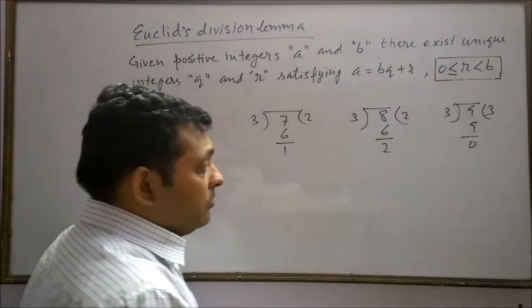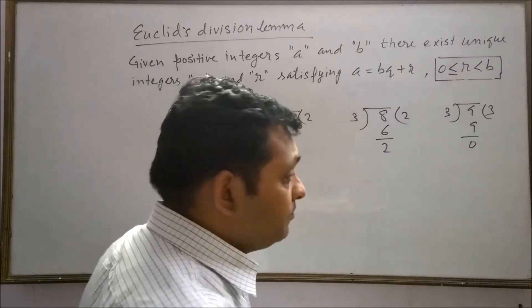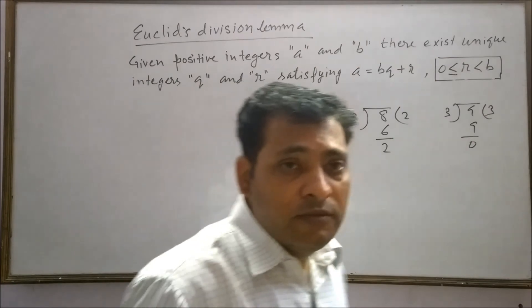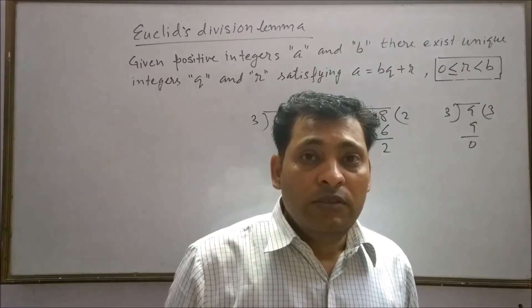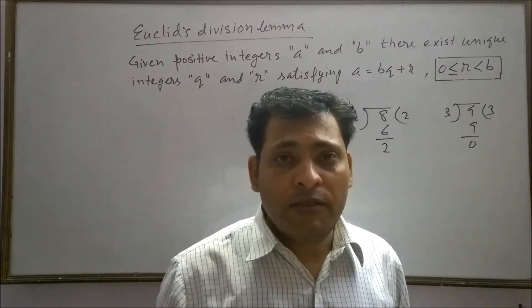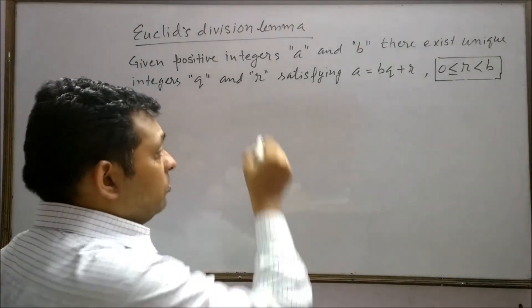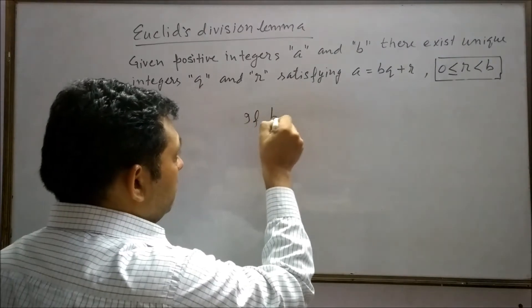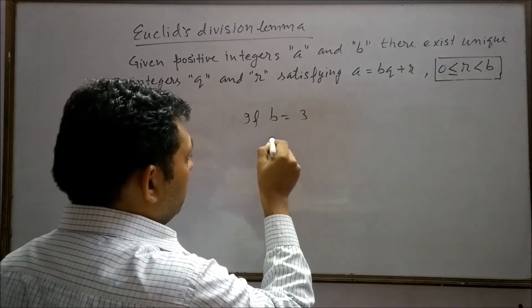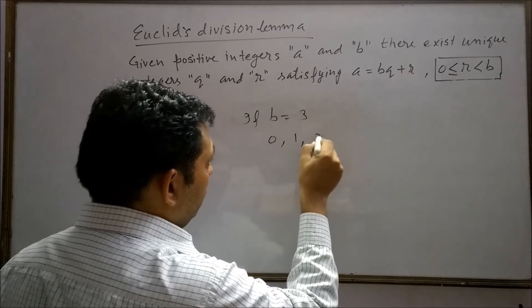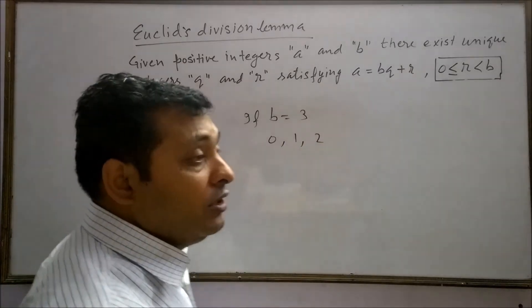It means remainder here cannot be 3 or more than 3. Suppose in some case remainder is 3, then 3 can be divided by 3 one time, meaning further we get remainder 0. So if b equals 3, then possible remainders will be 0, 1 and 2, not 3 and more than 3.